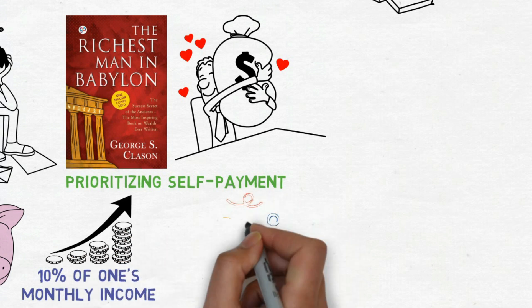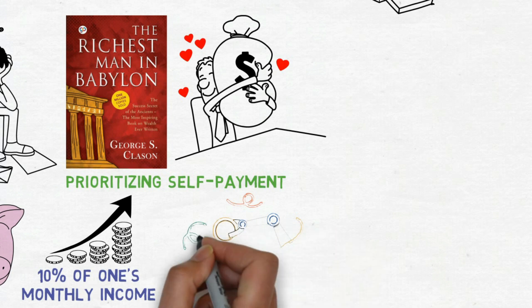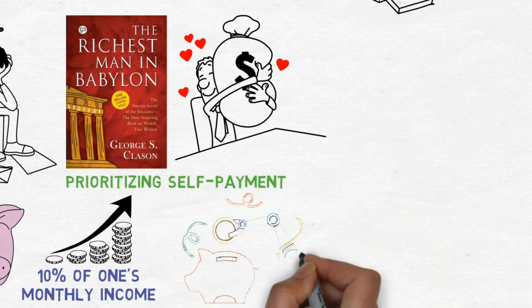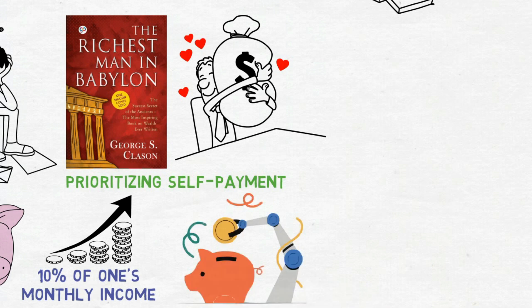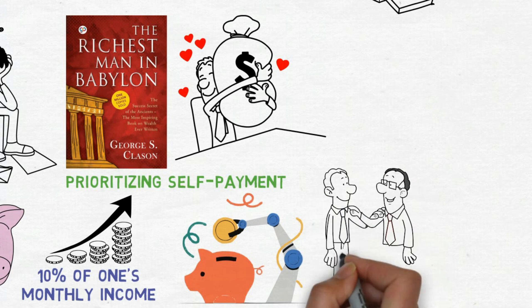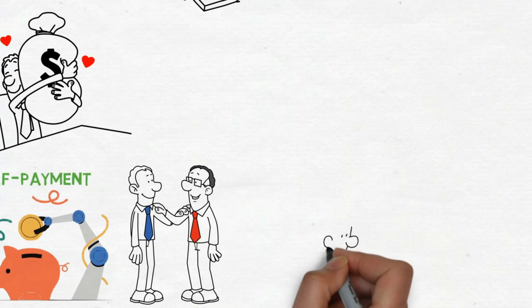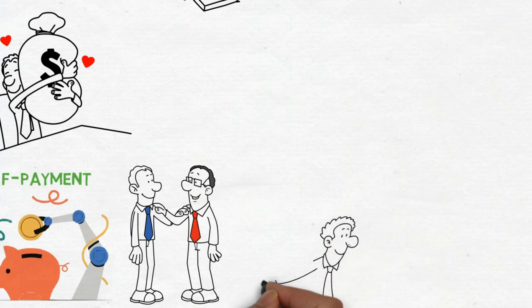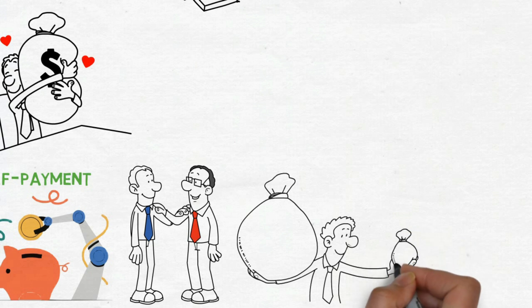To ensure consistent adherence to this 10% savings guideline, an effective strategy involves arranging automated deductions from your paycheck. Many employers offer the option to automatically divert a portion of your earnings into a separate savings account. This strategic approach ensures that the money you're saving remains somewhat out of immediate reach, reducing the urge to spend it impulsively.